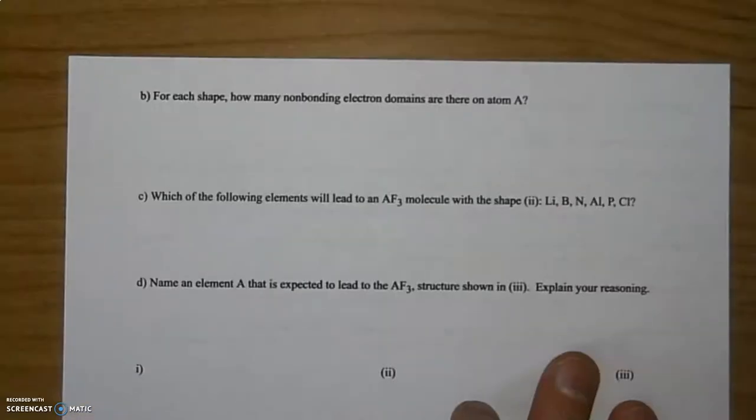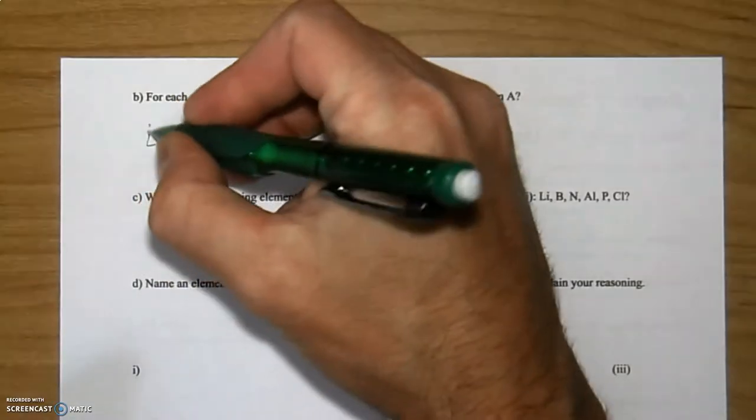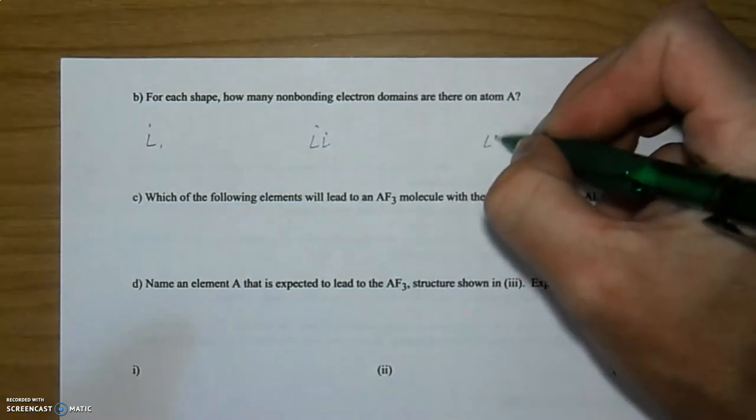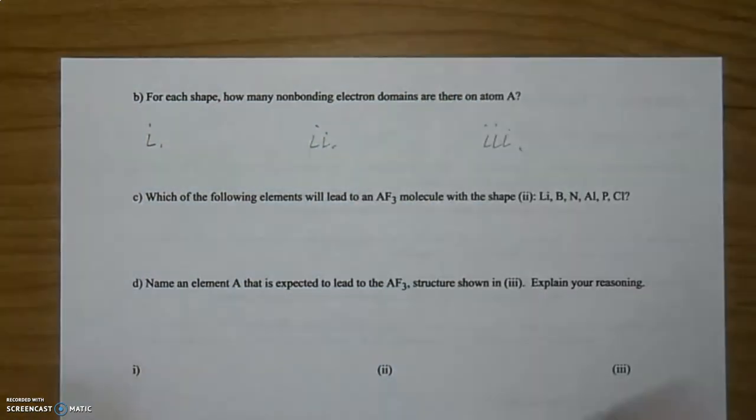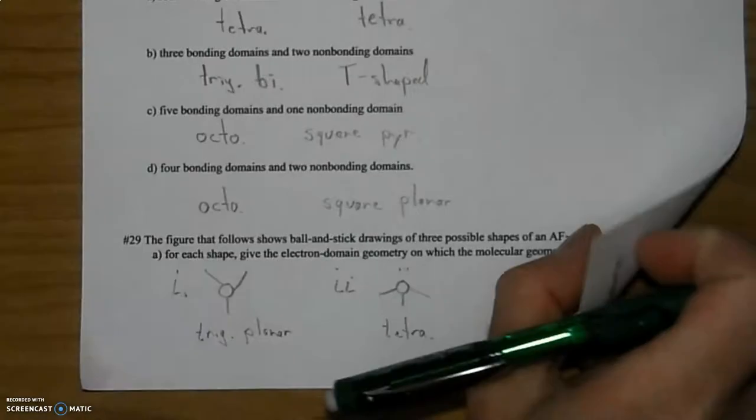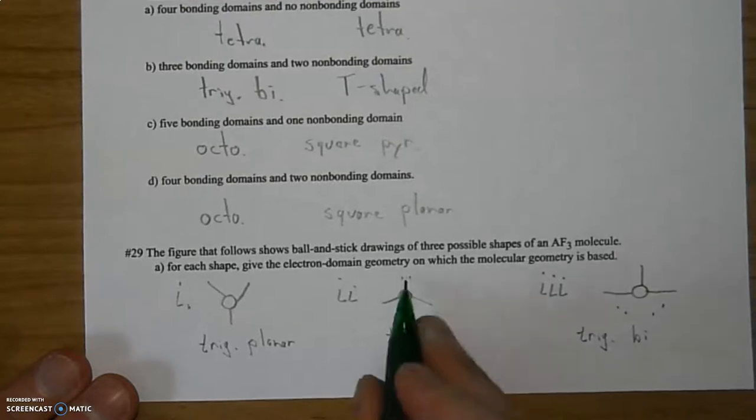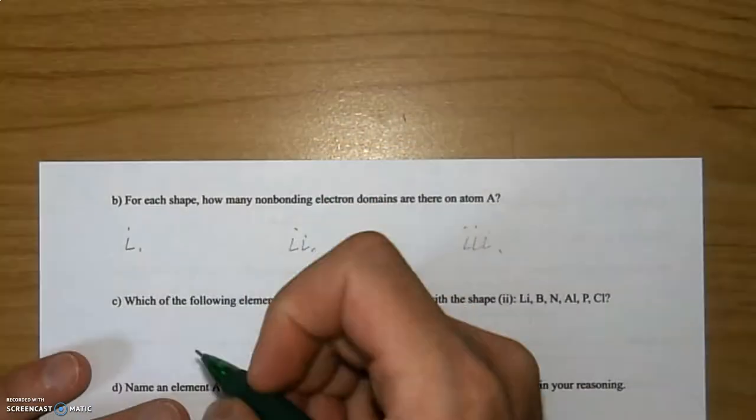Let's go over the answer. For each of the shapes, how many non-bonding electron domains are there on the central atom? I'll write down one, two, three. For the first one we had zero, for the second one one, and the third one two. So zero, one, and two.